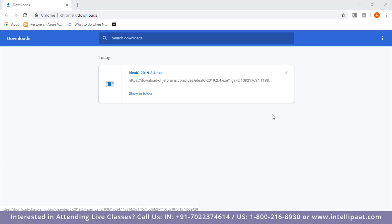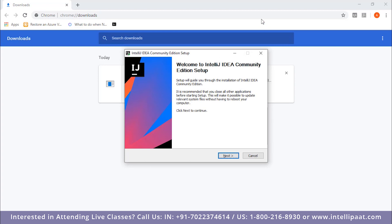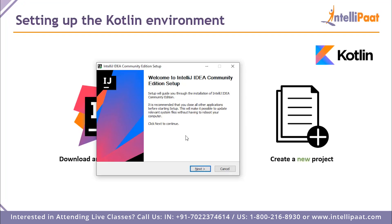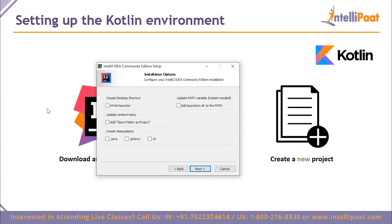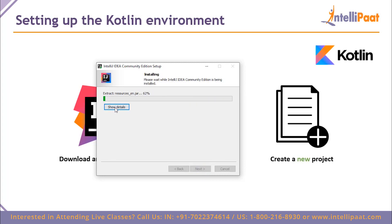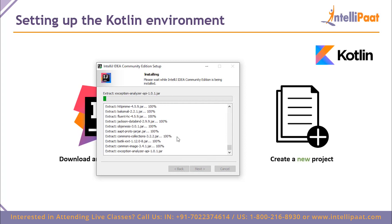The download took under a minute. To set up IntelliJ IDEA, you need admin access — enter your administrator password and begin installation. On the first screen, just hit Next. You can select the destination folder; the default is C:\Program Files\JetBrains. Hit Next again. Select your launcher based on your system — I'll check the 64-bit launcher since I have a 64-bit Windows machine. Then hit Next and Install. The full installation takes a couple of minutes.